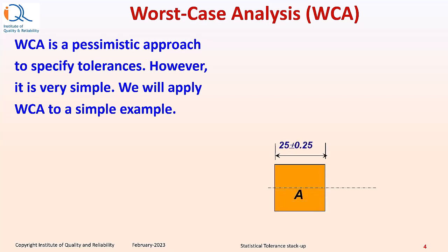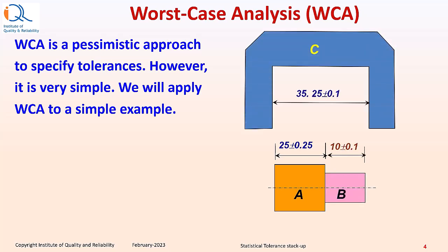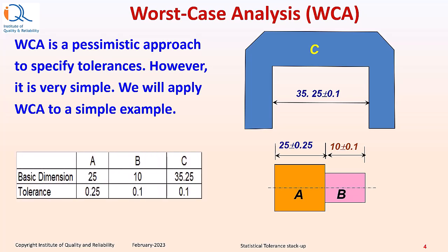Consider that there are three parts: part A, part B, and part C. The assembly of part A and B is to be fitted in part C. The tolerances of all the three parts are mentioned therein, and these are also shown in the table below.